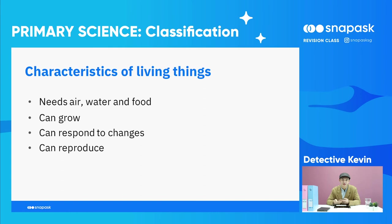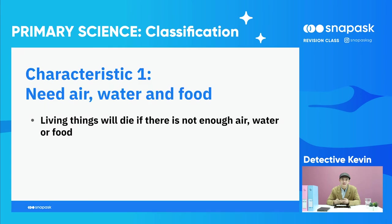The first characteristic: living things need air, water and food. Living things will die if there is not enough air, water and food. Think about you and me — when we do not eat, we get hungry. And if we do not have enough food, we will die.